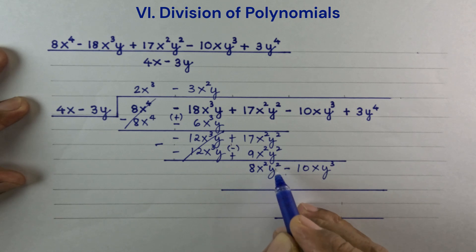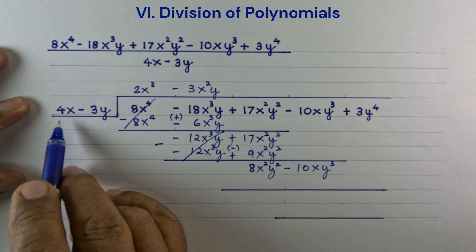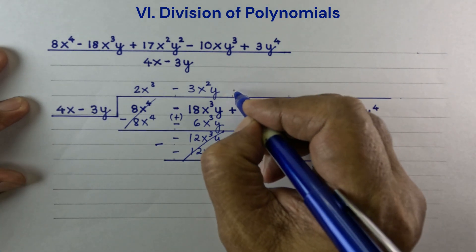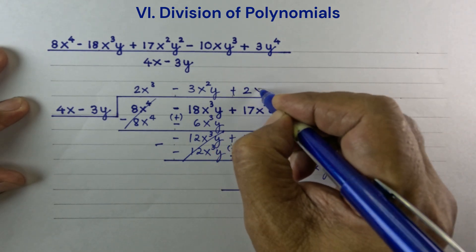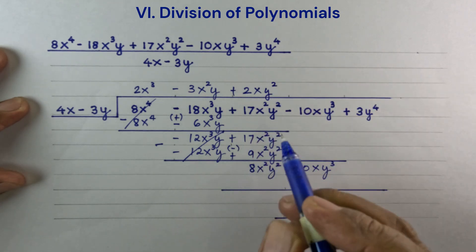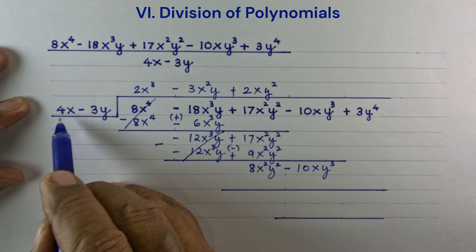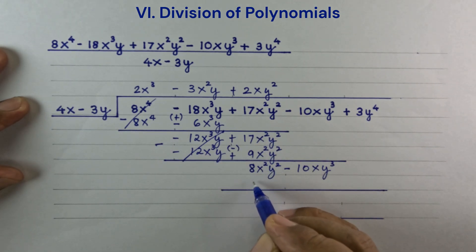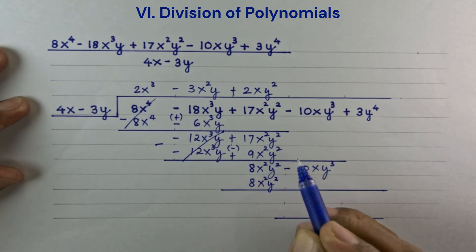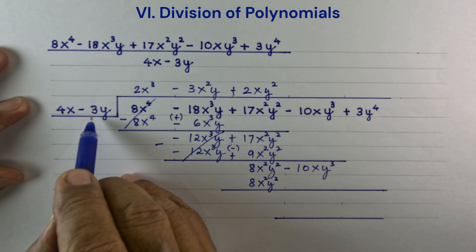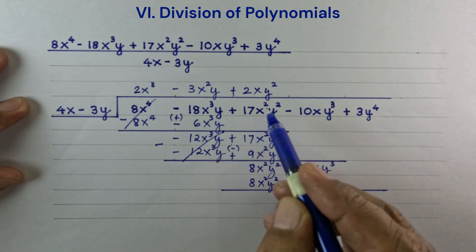8x squared y squared divided by 4x is 2xy squared, so that's plus 2xy squared. 2xy squared times 4x is 8x squared y squared. 2xy squared times minus 3y is minus 6xy cubed.